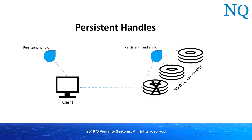If one server fails, the SMB client can continue the sensitive transaction through another server using the same handle. Connection and authentication on the backup server as well as reopening a handle happens transparently to the user. Note, however, that we have not discussed how persistent handles become available to other nodes, as well as how the client machine knows to transparently connect to the backup server.